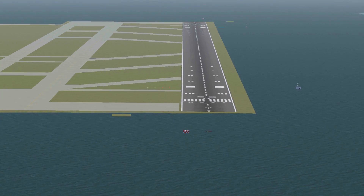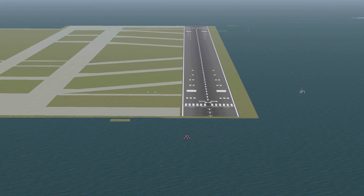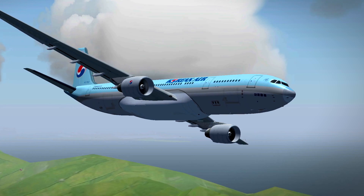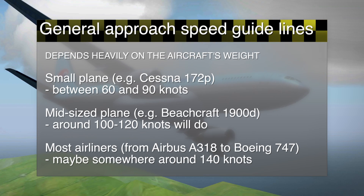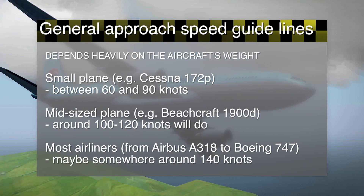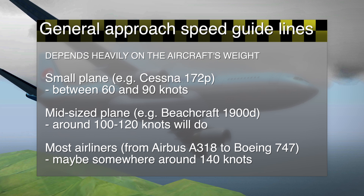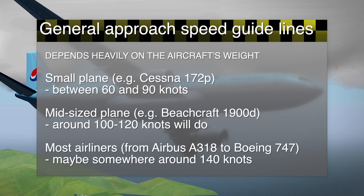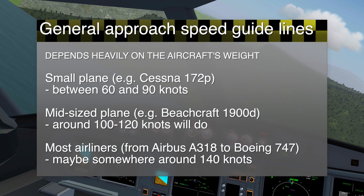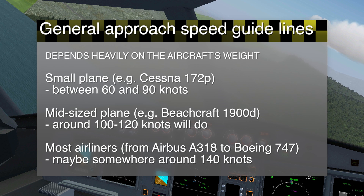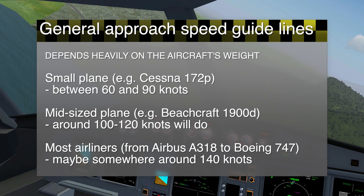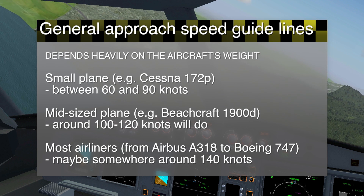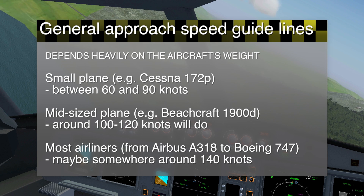The last main thing to worry about is speed. I recommend you look up the approach speed of the plane you are flying. When you are about to start your approach, your airspeed should be higher than the approach speed, but as you are descending gently start slowing down your plane. You don't have to reach the approach speed quickly, as long as you make sure you have reached it well before touchdown.